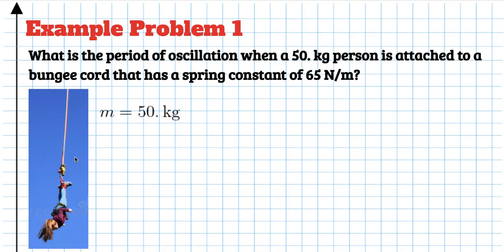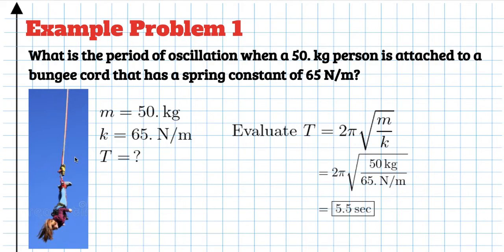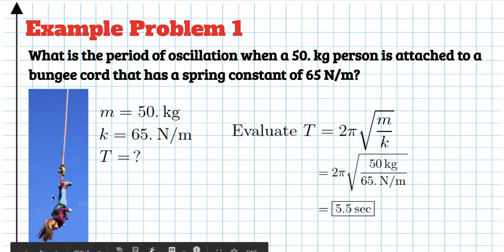We want to find the period. We identify mass and spring constant from the problem and evaluate T = 2π√(m/k). Plugging in the numbers, you get about 5.5 seconds — we can only use two significant figures. So it takes about 5.5 seconds for this person to complete a full cycle up and down.